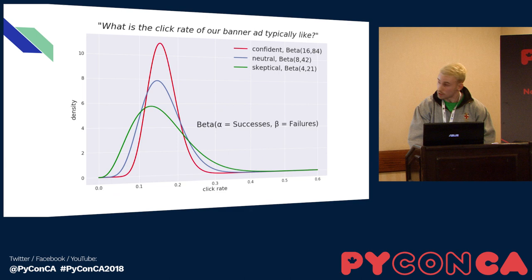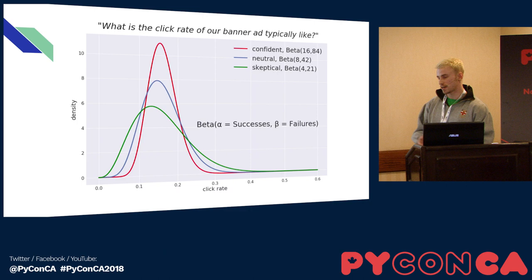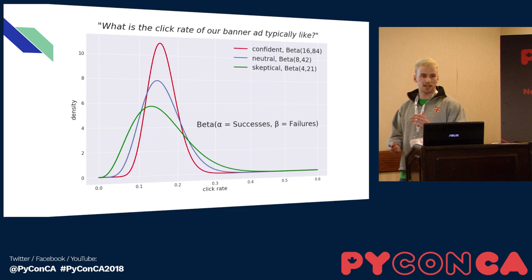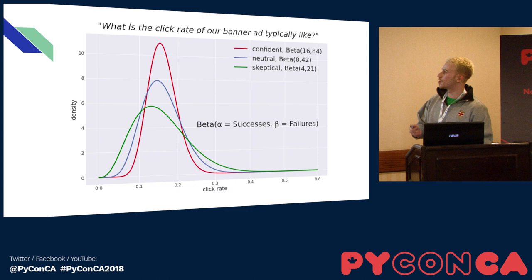The first step in doing any kind of Bayesian analysis is to first understand our prior belief. In the context of this A/B test, it's simply asking: what do we think the click rate of our banner ads is typically like? My answer can be completely subjective, and that's kind of the art of doing proper Bayesian inference. To model my belief, I'll use a beta distribution, which has two parameters — alpha, the number of times you see a success, and beta, the number of times you see a failure. You can think of alpha and beta kind of like odds, with the only difference being that the higher the numbers are, the more confident you are about that prior belief, because higher numbers will decrease the variance of the curves.